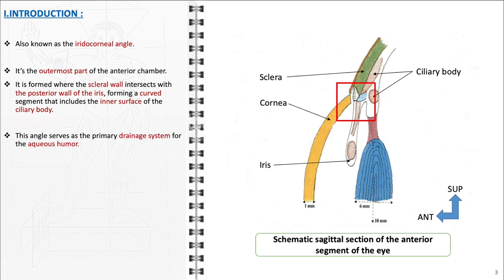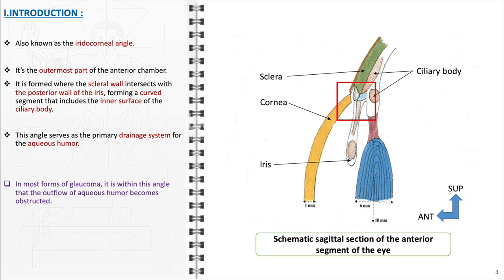The primary function of this angle is the drainage of the aqueous humor, the fluid that maintains pressure in the eye and provides nutrients to the eye components. In most forms of glaucoma, it is within this angle that the outflow of aqueous humor becomes obstructed.